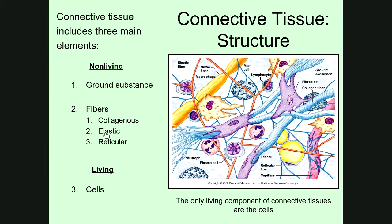The second type of fiber is known as an elastic fiber. Looking at the diagram, you'll notice thinner fibers represented in orange that are interspersed throughout the tissue. These are the elastic fibers. As their name implies, they are really stretchy. When you have elastic fibers, they tend to give the tissue the quality of being very stretchy.